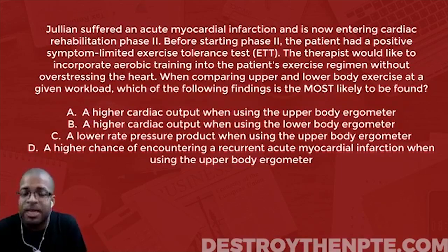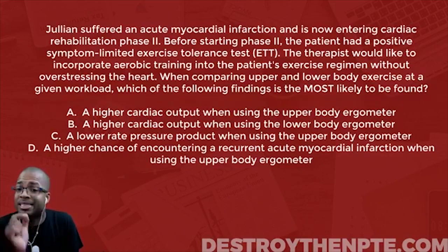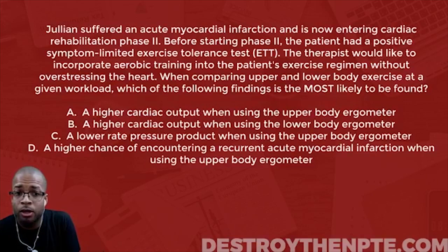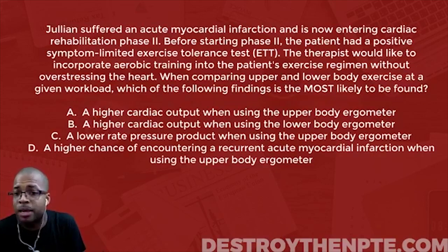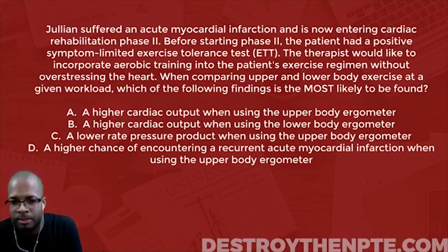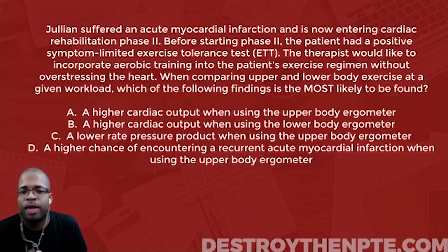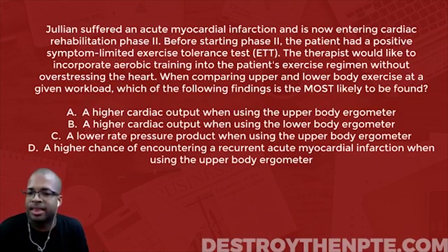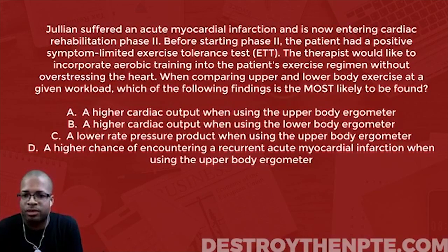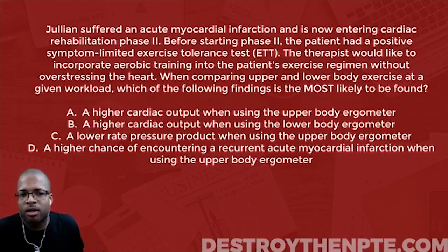The fact that it's positive lets us know that this patient was experiencing some type of ischemia during that exercise tolerance test, where they may have had to terminate it. The test is positive because the physician found ischemia related to the exercise on the treadmill or however they were doing the ETT. So we know that ischemia is present. The therapist would like to incorporate aerobic training without overstressing the heart — pretty straightforward.